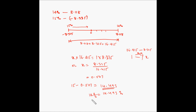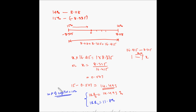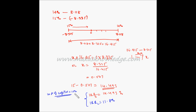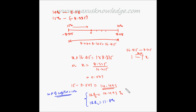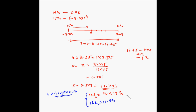Similarly, performing the same calculations for project L gives IRR = 11.8%. The cost of capital is 10%, and both projects yield more than the cost of capital. Hence, if both projects are independent of each other, both should be accepted. However, if they are mutually exclusive and only one can be accepted, project S should be chosen as it provides a higher internal rate of return.